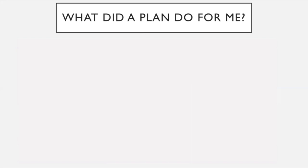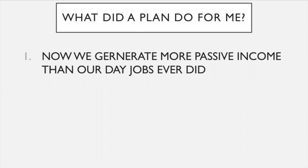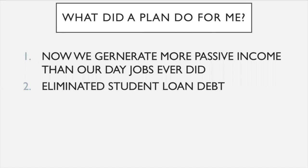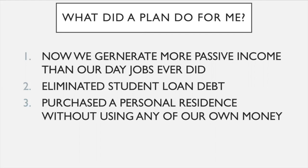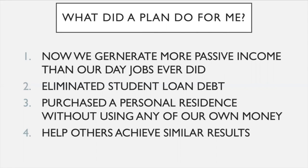So what did a plan do for me? When I first came across the idea of writing the plan down, putting it on paper with the income goals and action steps I needed to take and the businesses I needed to build — my wife and I now generate more passive income than our day jobs ever did. We eliminated all of our student loan debt and purchased a personal residence without using any of our own money. That's what a plan initially did for us, and now we get to help others achieve similar results.